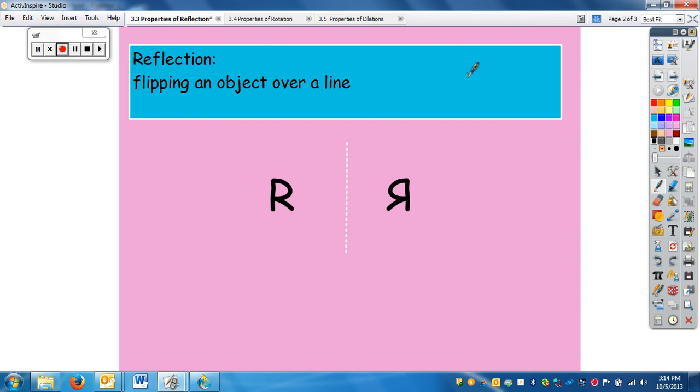Reflection is flipping an object over a line. The most common reflection you can think of is actually a mirror - looking at yourself in a mirror is a reflection. Notice here we have R. When I flip R over the line, I flip R over the line.